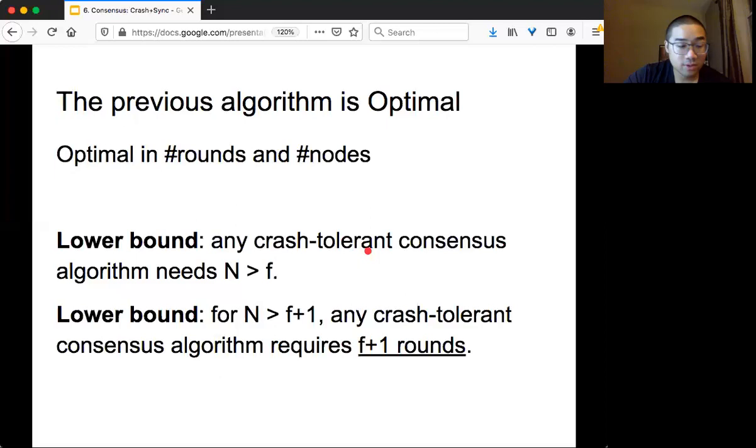And it turns out that even though this algorithm is pretty simple, it's in fact optimal. It's optimal in two senses: number of rounds and number of nodes. The first lower bound is that any crash-tolerant consensus algorithm needs N > f nodes to solve consensus. Because in the trivial case, everybody will fail. Then you don't really have any output. And then the next lower bound is not as obvious. It's that when your number of nodes n is strictly greater than f+1, then you need at least f+1 rounds to solve consensus. The proof is not very intuitive. We might revisit next time. But just remember that how do we solve consensus - we need to keep exchanging values and we need to run long enough in order to solve consensus.